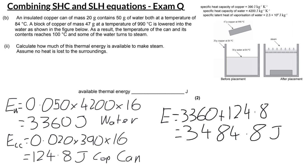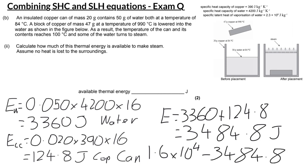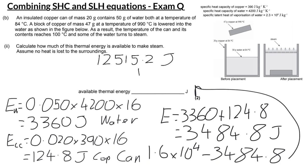Remember that we had 1.6 × 10⁴ joules released by the copper block, and only 3,484.8 joules were needed to heat up the water and the copper can. We find the difference: 16,313.7 − 3,484.8, which gives us 12,828.9 joules — or to the nearest two significant figures, approximately 13,000 joules available to evaporate water as steam.